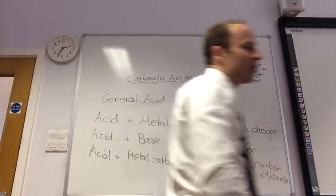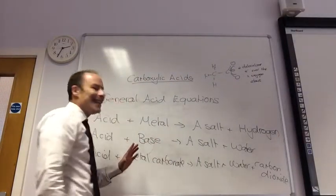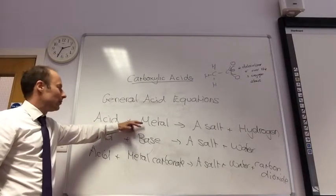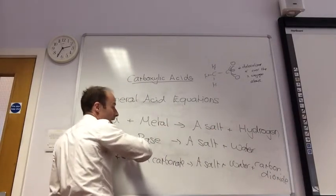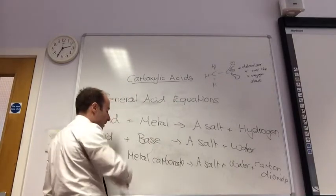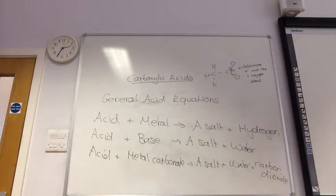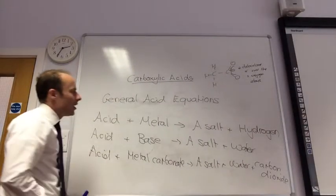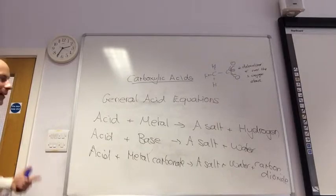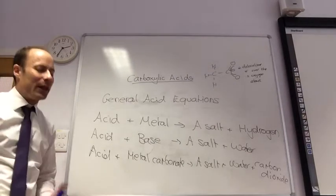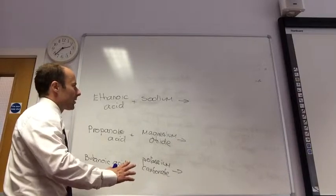Those general equations may not be on your summary sheet, so you may want to add them. Think about what you'd observe in each reaction. Now, let's do some practice equations — word equations first, then balanced equations. We'll do the first one together, then you can have a go at the rest.